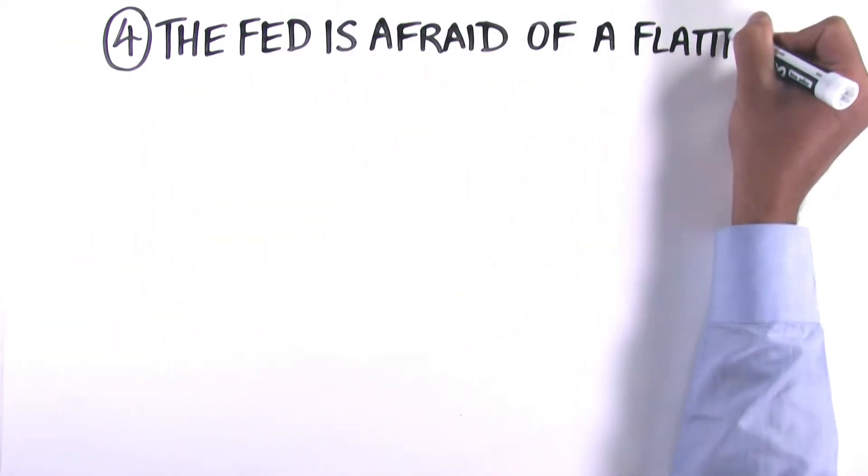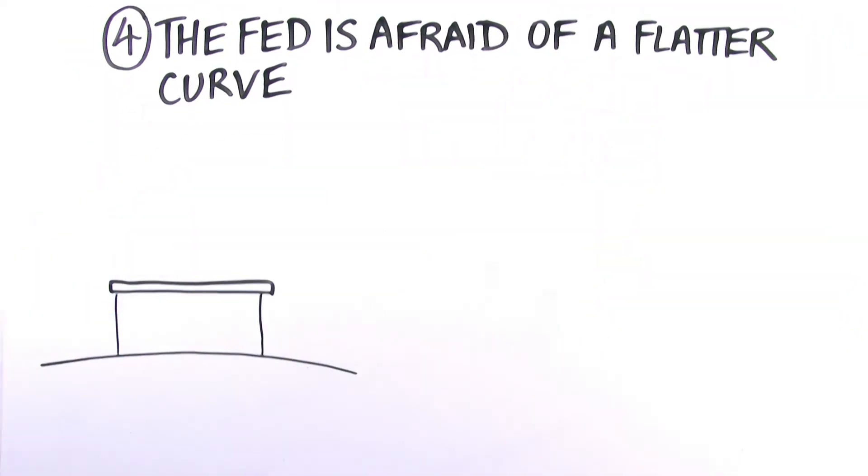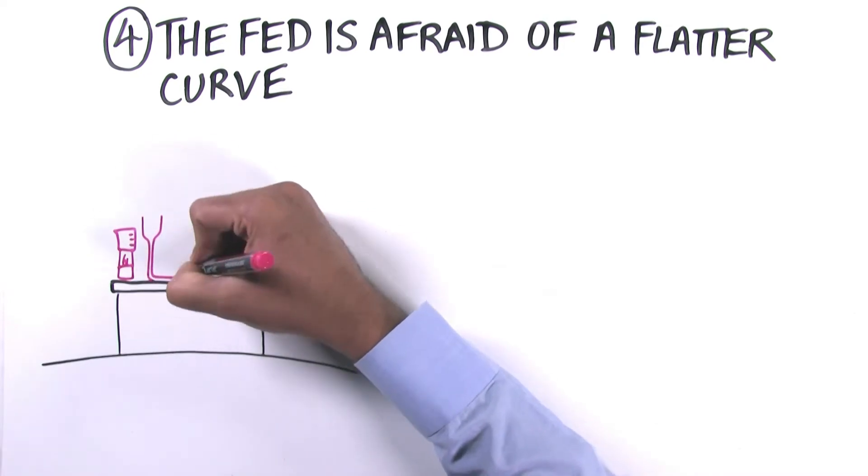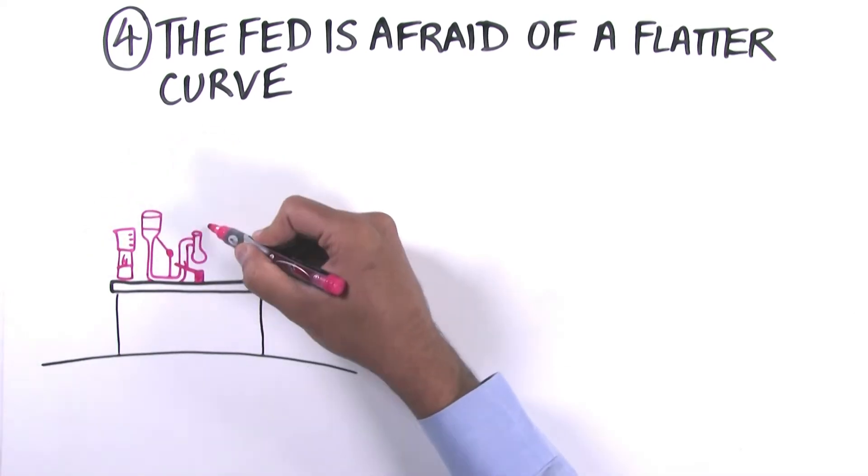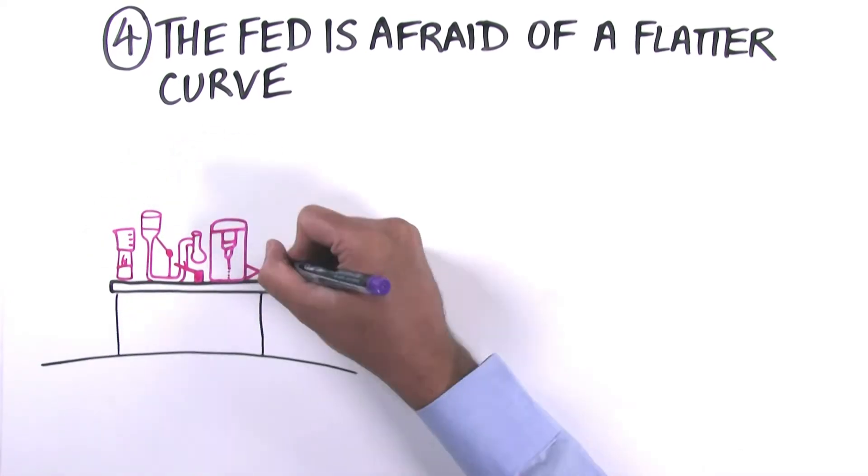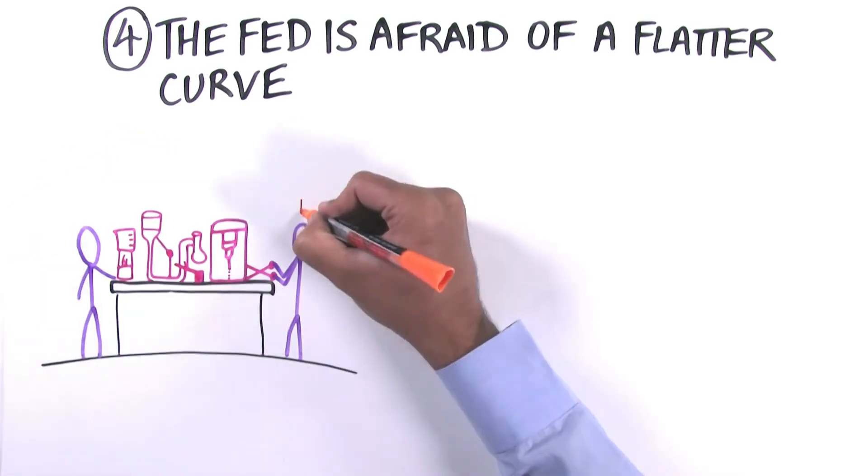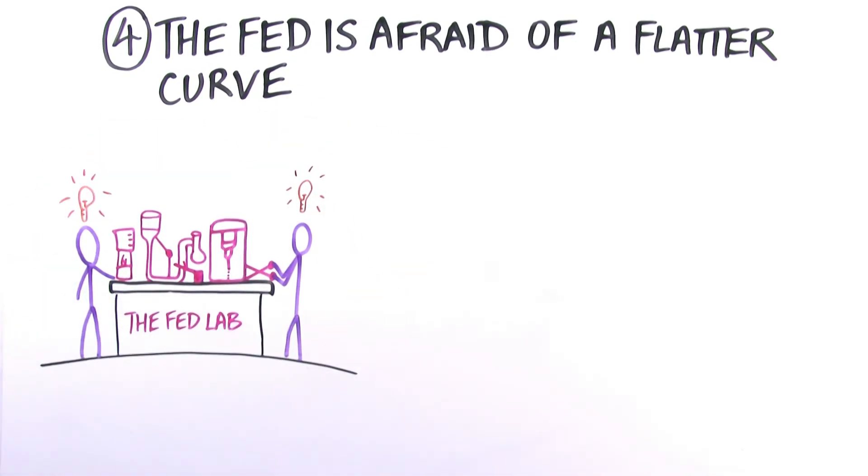Number four: People say, okay, fine. Wait for inversion. The curve doesn't tell us much about markets. But you know what? The Fed is afraid of a flatter curve. And so you can keep your head in the sand, but central bankers won't. Well, bad news for the bears.